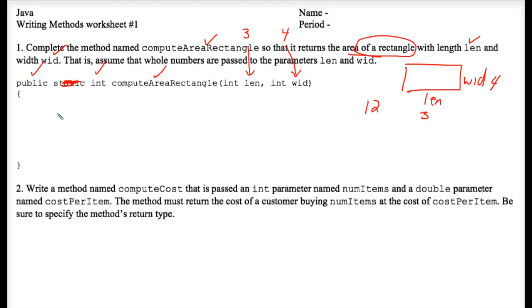Okay, so how does this work? Well, you could do this in one line of code. Return len times wid. This is a perfectly appropriate answer and I'm ready to move on to the next exercise.